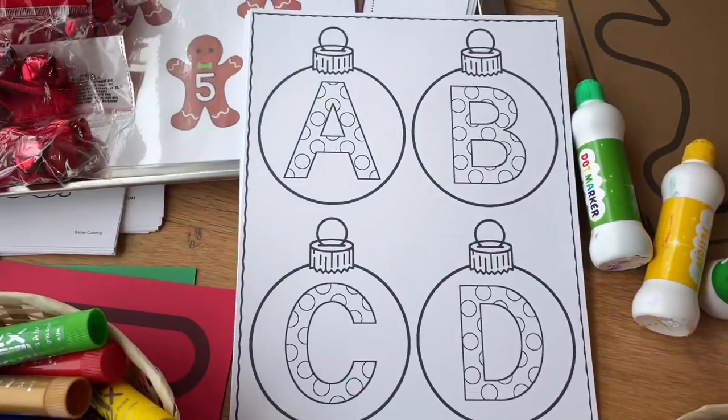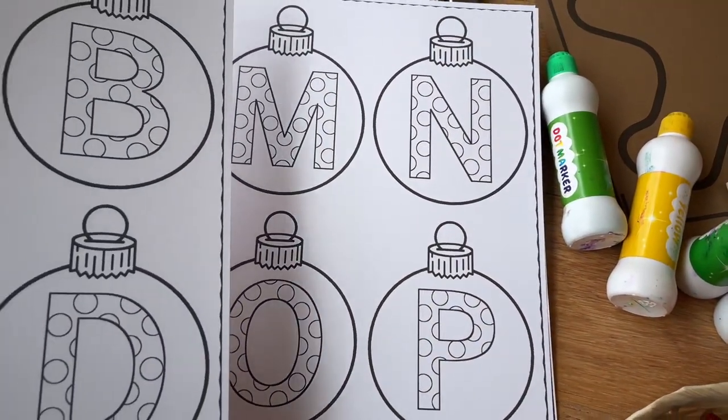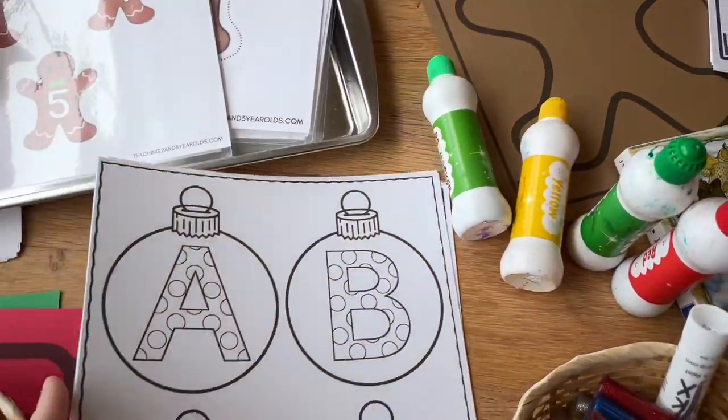This is kind of fun. These are letter ornaments. I will let each child paint the page that the first letter of their name is on with the dot paints and then I'll cut them out, laminate them and we can decorate the room with them.